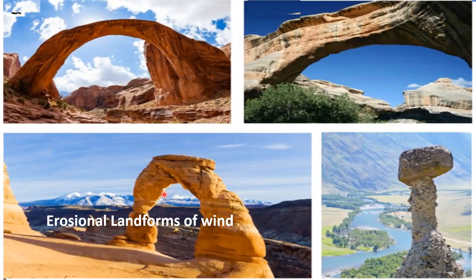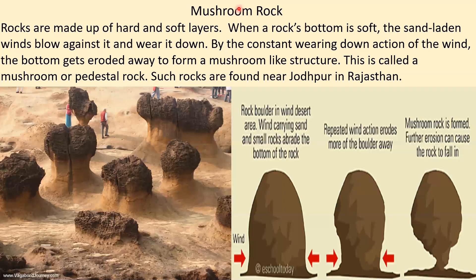First, let us see about the erosional landforms of wind. Mushroom rock. The rocks are made up of hard and soft layers. When a rock's bottom is soft, the sand-laden winds blow against it and wear it down. The softer parts of the rock get eroded quickly, and by the constant wearing down action of the wind, the bottom gets eroded away to form a mushroom-like structure. This is called a mushroom or pedestal rock. Such rocks are found near Jodhpur in Rajasthan.